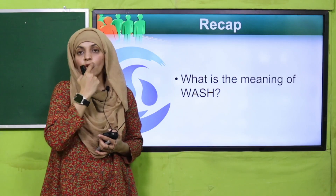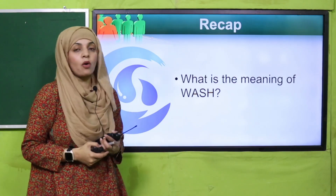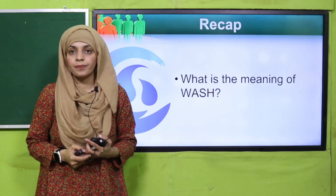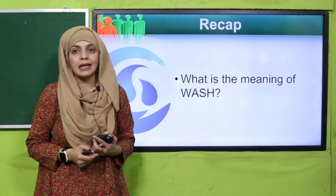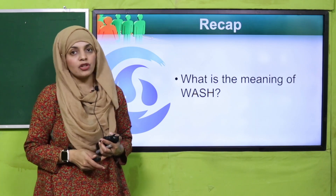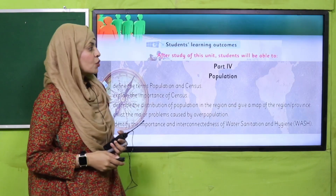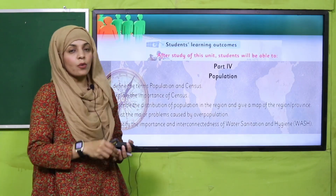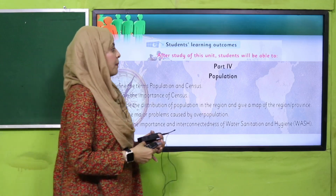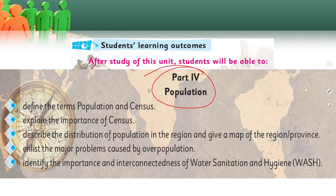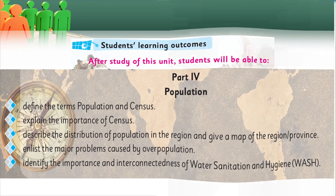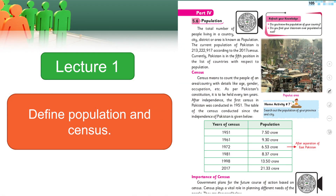Hamne WASH ka concept padha tha — so what is the meaning of WASH? Water, Sanitation, Hygiene. Very good. Okay my dear students, these are all the student learning outcomes jo ke hamne part four mein, which is Population, cover kiya. One by one in ko revise kerte hain with the reading pages. So let's get started.